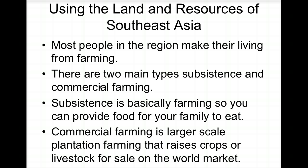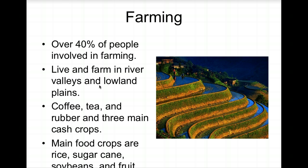Most people in the region make their living by farming. There are two main types: subsistence farming, where you grow food to eat, and commercial farming, which is larger-scale plantation-style farming that raises crops or livestock for the world market. Over 40% of the people are involved in farming. They live and farm in the river valleys, lowlands, and plains. Coffee, tea, and rubber are the three main cash crops.